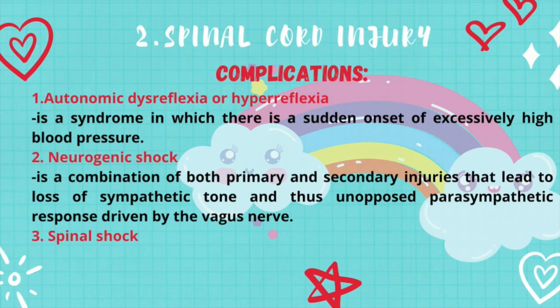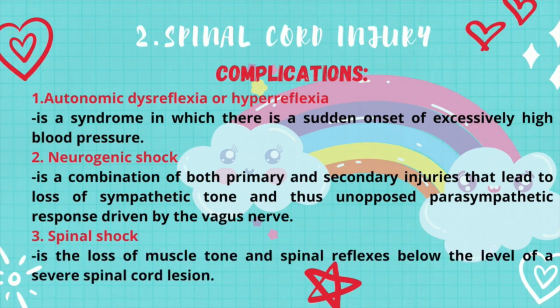Next is neurogenic shock — a combination of both primary and secondary injuries that lead to loss of sympathetic tone and unopposed parasympathetic response driven by the vagus nerve. Consequently, patients suffer from instability in blood pressure, heart rate, and temperature regulation, leading to systemic hypotension and bradycardia. Spinal shock is the loss of muscle tone and spinal reflexes below the level of a severe spinal cord lesion. It does not imply circulatory collapse, but suppressed spinal reflexes below the level of cord injury.